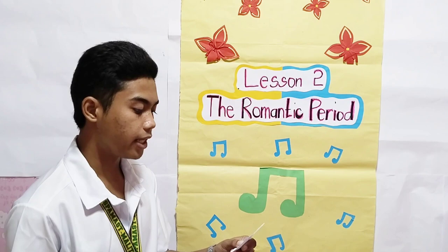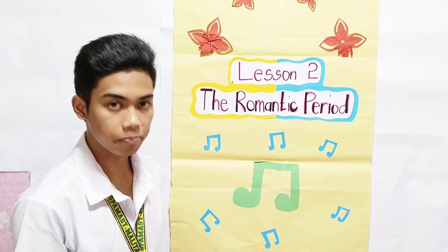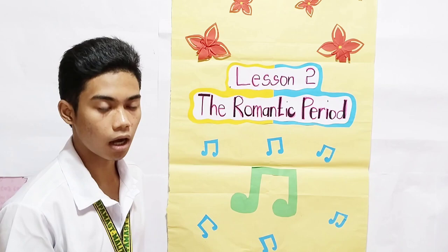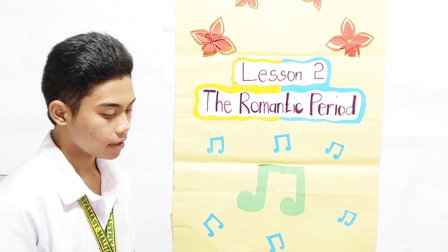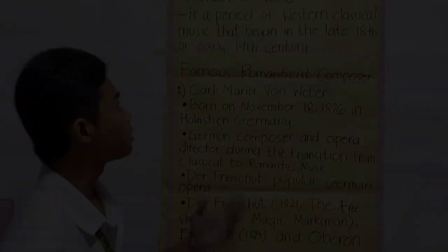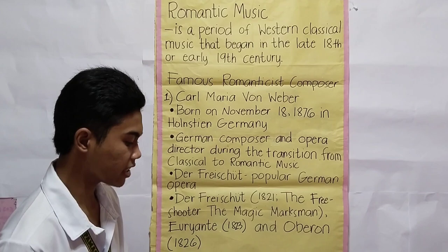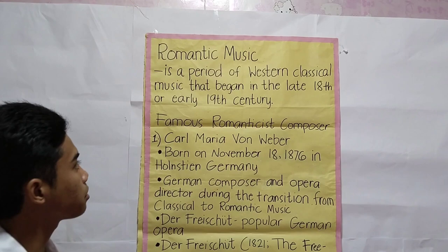The Romantic Period had a profound impact on the development of Western classical music. Its emphasis on individualism, expression, emotion, and imagination helped pave the way for the modernist movements of the 20th century, and its legacy can still be heard in the music of contemporary composers. Romantic Music is a period of Western classical music that began in the late 18th and early 19th century, with emphasis on personal, emotional expression and freedom.